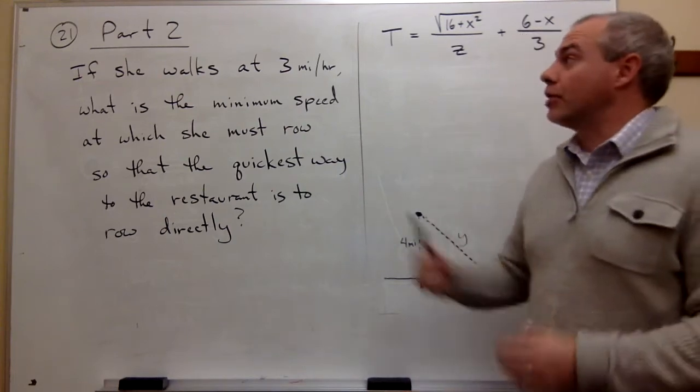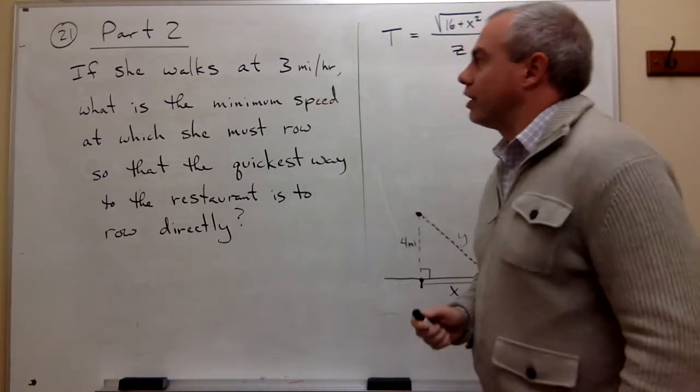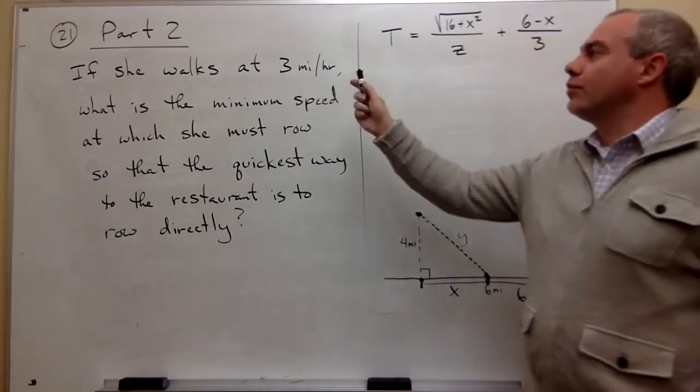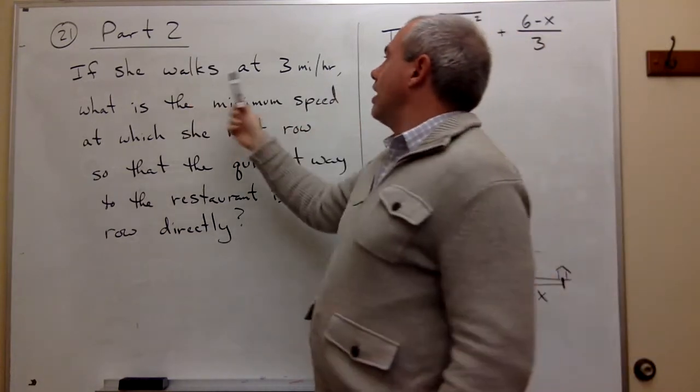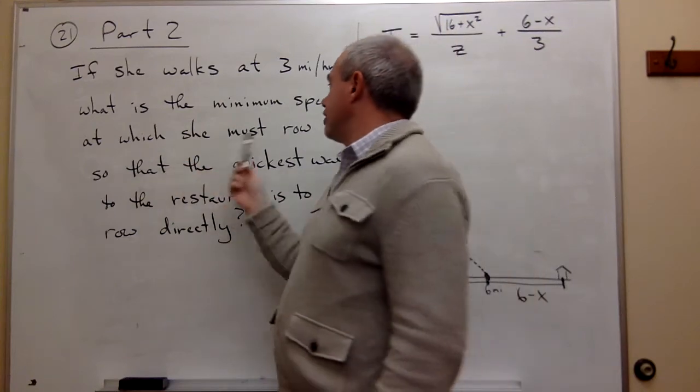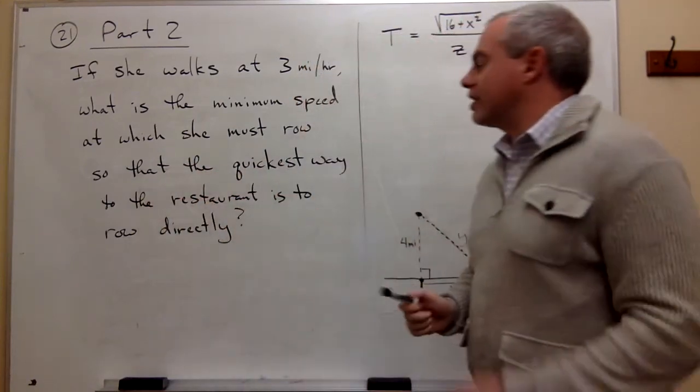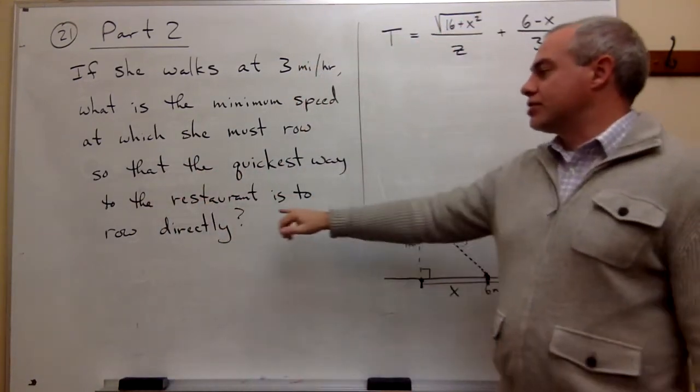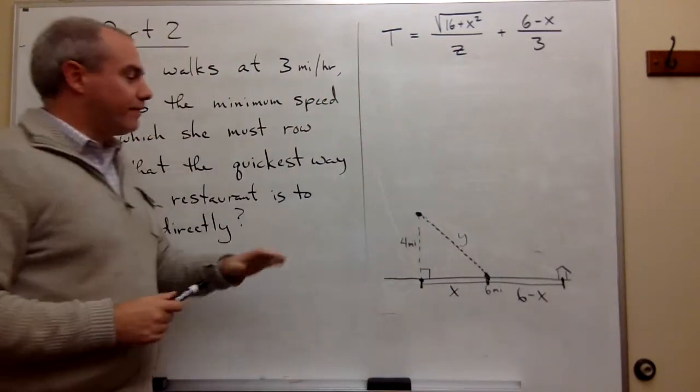Okay, so now let's look at part two of problem number 21. In part two we want to ask the question: if she walks at three miles an hour, what is the minimum speed at which she must row so that the quickest way to the restaurant is to row directly to the restaurant?